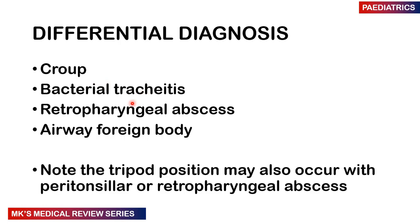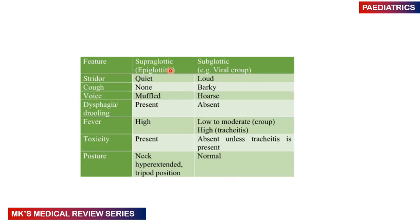Differential diagnosis includes croup, bacterial tracheitis, retropharyngeal abscess, and foreign body in the airway. Note that the tripod position may also be seen in peritonsillar and retropharyngeal abscesses. Comparing epiglottitis and viral croup: stridor is quieter in epiglottitis and louder in croup; cough is absent in epiglottitis but a barking cough is present in croup; voice is muffled in epiglottitis and hoarse in croup; dysphagia and drooling are present in epiglottitis but not in croup; fever is high in epiglottitis and low to moderate in viral croup; and the tripod position is seen in epiglottitis but not in viral croup.